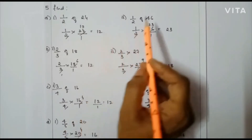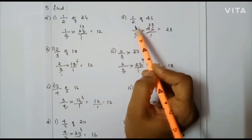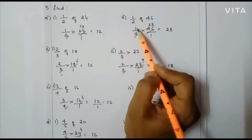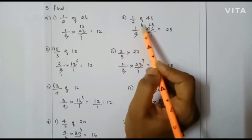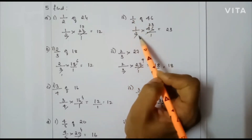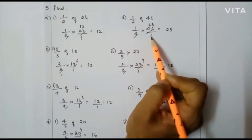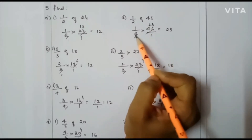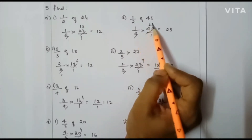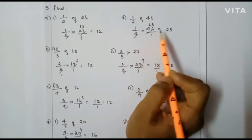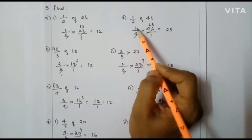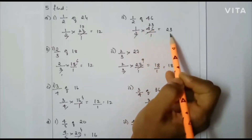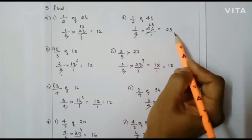Next case: 1/2 of 46, that is 1/2 × 46/1. Here I can cancel the 2 and 46: 2 divides 46 giving 1 and 23. So 1 × 23 = 23, and 1 × 1 = 1 in the denominator. So the final answer will be 23.